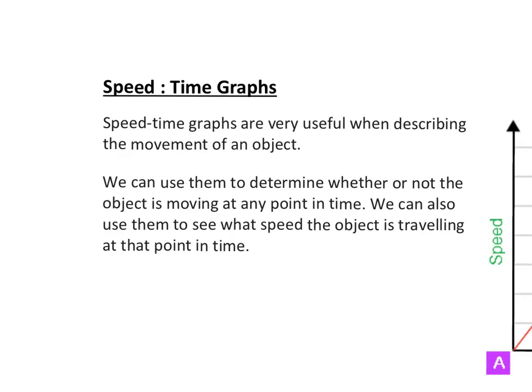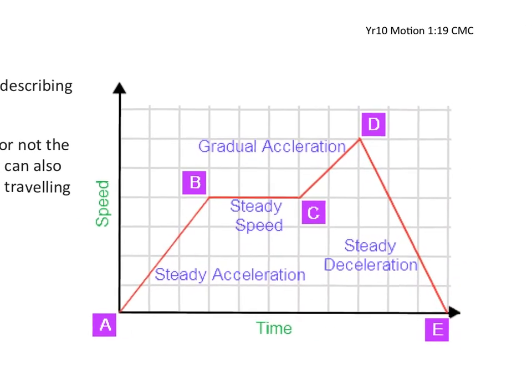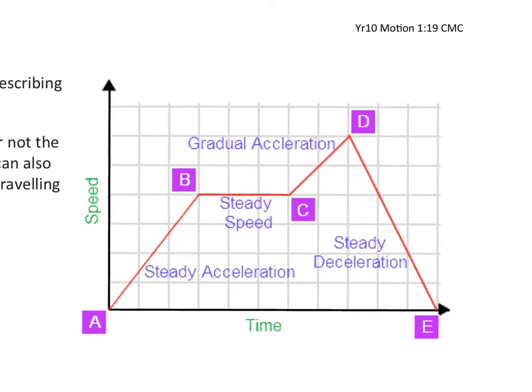If we look at this example here, this is a classic speed time graph where you have a situation where you start at zero velocity, you then increase the speed. So here we have a steady acceleration between a and b.